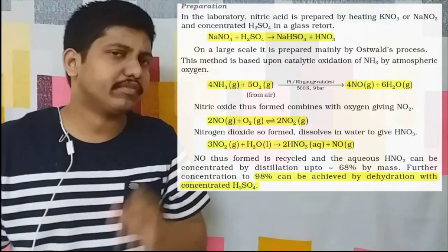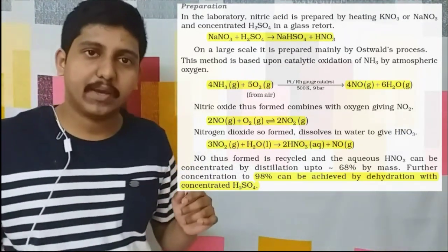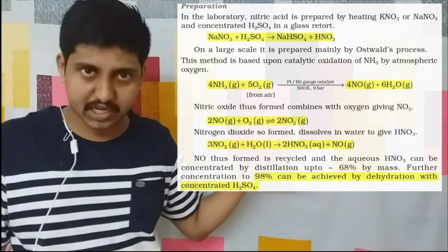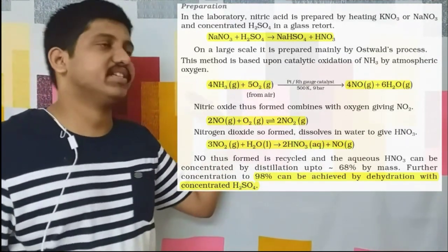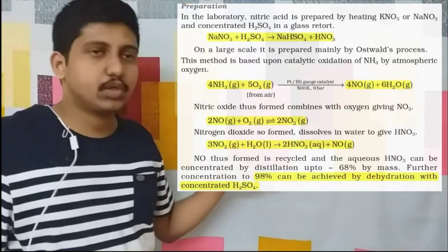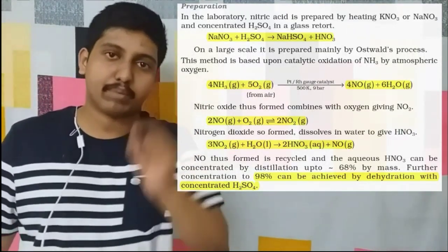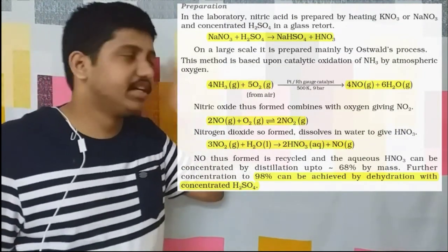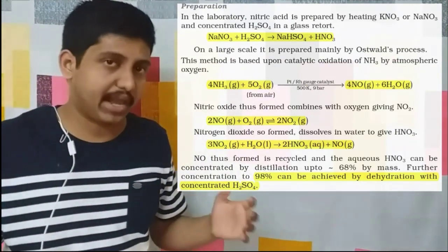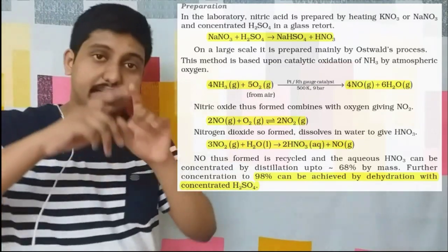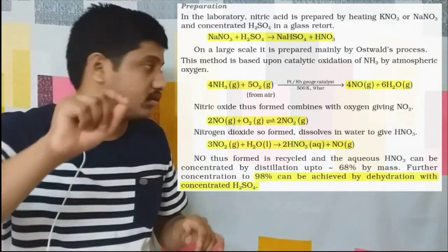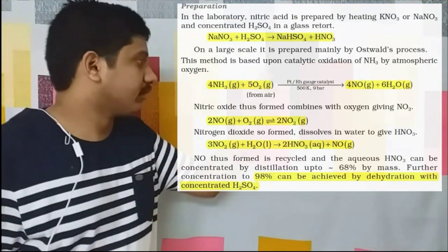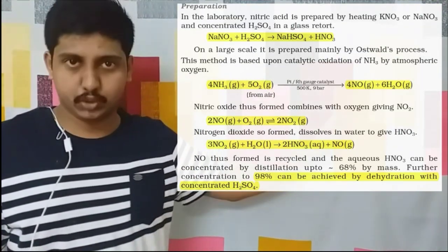Preparation of nitric acid: in the laboratory, from chili salt or Indian salt — sodium nitrate — when it combines with sulfuric acid, it produces HNO3. And next, commercial preparation by Ostwald's process. Ammonia is treated with oxygen from air; the catalyst is platinum-rhodium at 500 Kelvin temperature and 9 bar pressure, giving our NO and H2O.